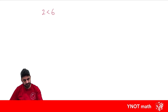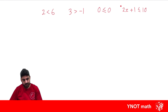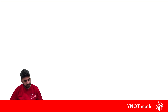We can use these to write some statements. We can say that two is less than six, three is greater than minus one, zero is less than or equal to zero. We can even mix algebra in there — for example, 2x plus 1 is less than or equal to 10. That one we can actually solve for x, but we're going to look at that in our next video.